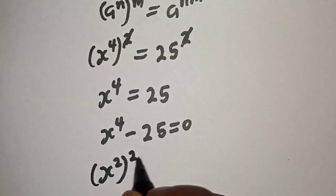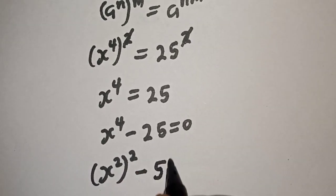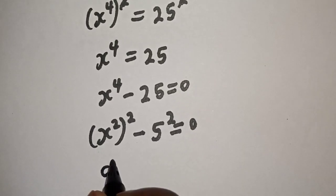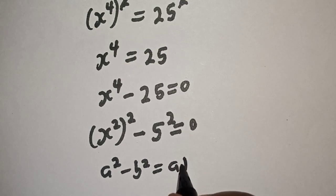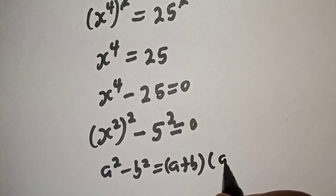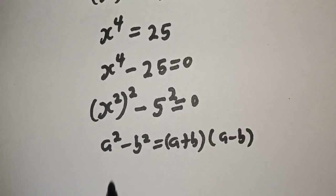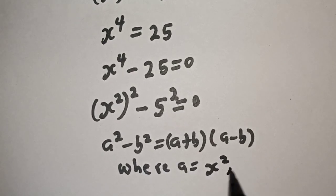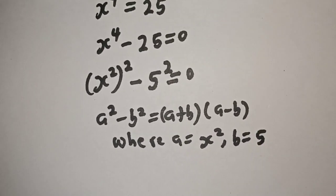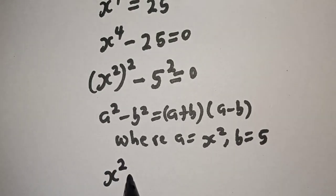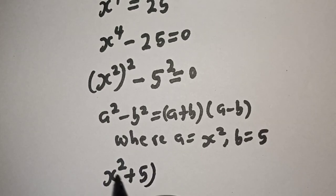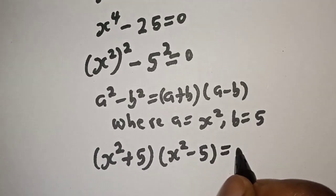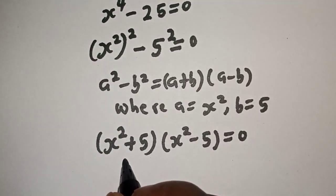s raised to power 4 can also be written as s squared raised to power 2, and 25 can be written as 5 squared. This is equal to 0 — this is a difference of two squares: a squared minus b squared equals a plus b multiplied by a minus b, where a equals s squared and b equals 5. So we have s squared plus 5, multiplied by s squared minus 5, is equal to 0.